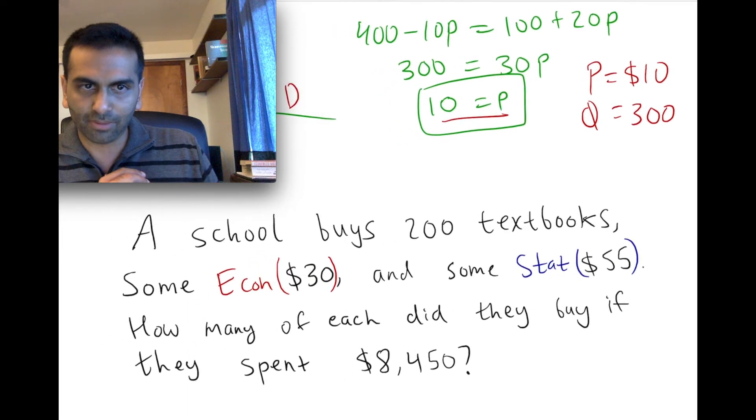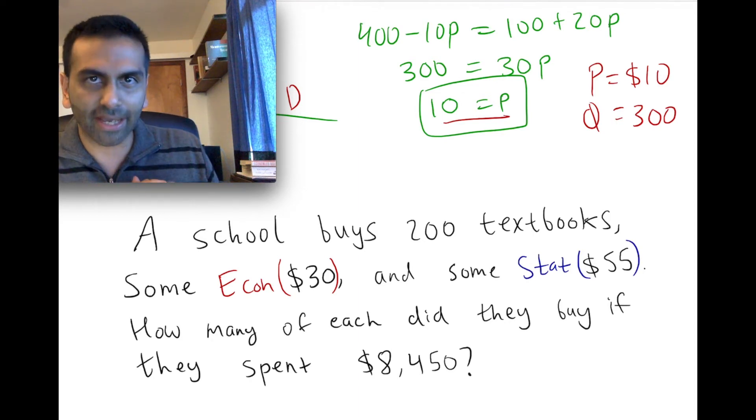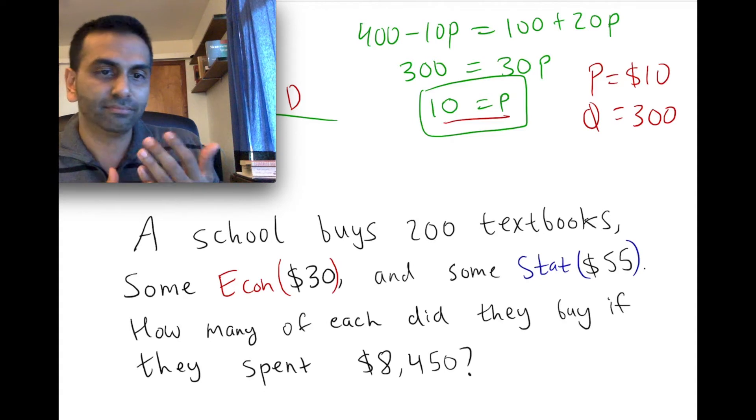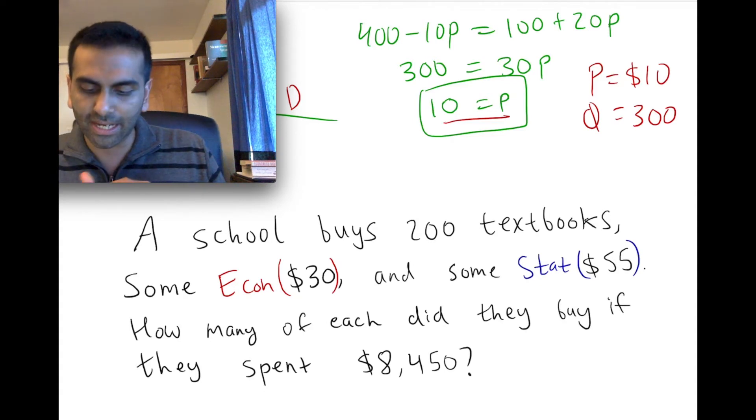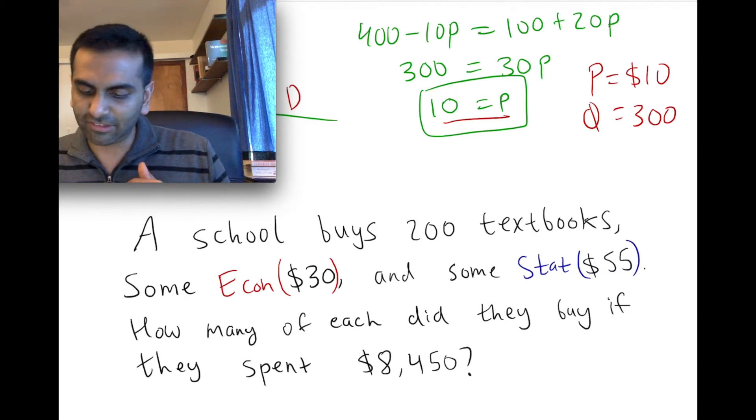Now let's do another application problem. Let's read this question here. They're not giving us any equations. They're saying a school buys 200 textbooks. Some of them are econ textbooks, which are $30, and some of them are stats textbooks, which are $55. And the question is, how many of each did they buy if the school totally spent this much money?